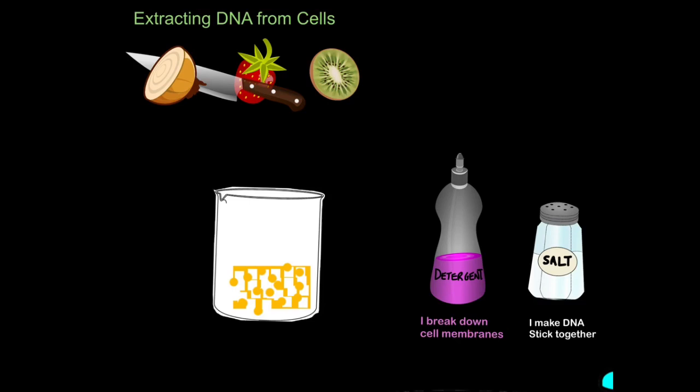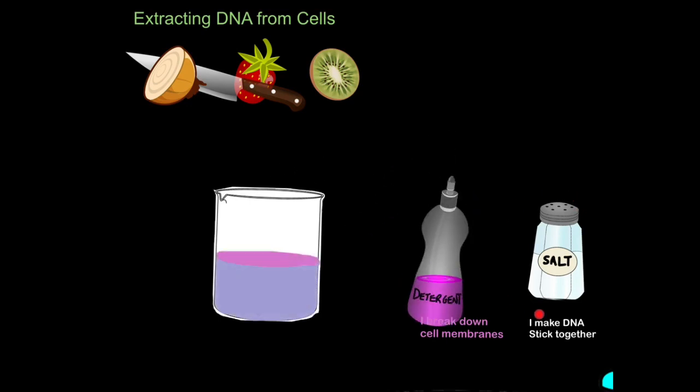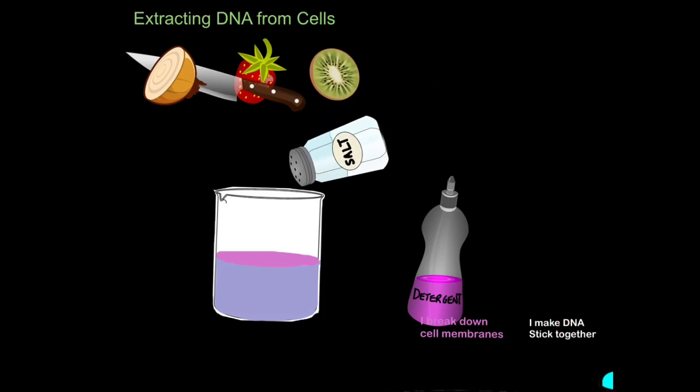Remember, DNA is housed inside cells, so we need to break down the barrier that separates cells from the environment so we can access that DNA. So we add some of that into our beaker. Next, we're going to add some salt because that makes the DNA stick together, so it clumps together so it's much easier to detect. So add some salt.